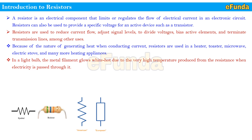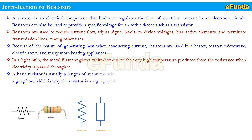Then the curious question is: why is the symbol of a resistor a zigzag? A basic resistor is usually a length of nichrome wire wound around a ceramic tube. From the side view, it appears as a zigzag line, which is why a resistor has a zigzag symbol. The one on the left shown as a zigzag line is the American symbol, and the one on the right-hand side is the international one.